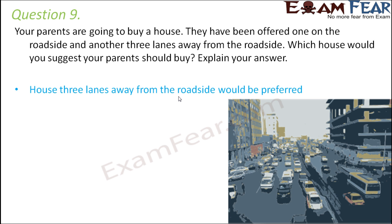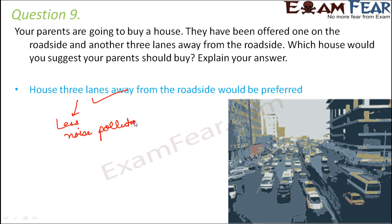Question number 9: Your parents are going to buy a house. They have been offered one on the roadside and another three lanes away from the roadside. Which house would you suggest? A house on the roadside means you are more exposed to noise pollution from vehicle honking. Therefore, the house three lanes away would be preferred because there is less noise pollution, and you can lead a more peaceful life.